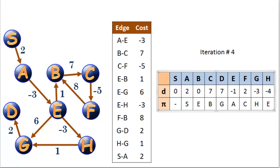Graphically we can see that it costs us 6 to get from E to G — that was the original path. But if we go through H, it costs negative 3 plus 1, so only negative 2 to get from E to G taking this route. So it's a better deal. And probably in the next iteration we'll see that taking G to D, we'll find a cheaper route to D. H to G is already taken, and S to A is not going to make any difference.